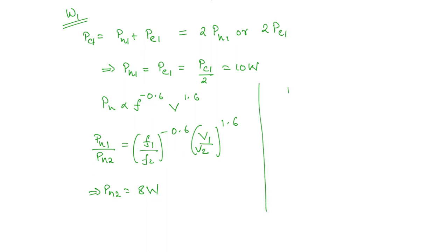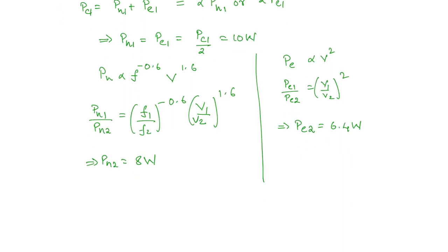For eddy current losses, P_E is proportional to the square of voltage. So P_E1 / P_E2 = (V1/V2)². With P_E1 = 10 W, V1 = 200, V2 = 160, we get P_E2 = 6.4 watts. Therefore the total core losses — the wattmeter reading W1 — is P_H2 + P_E2 = 8 + 6.4 = 14.4 watts.